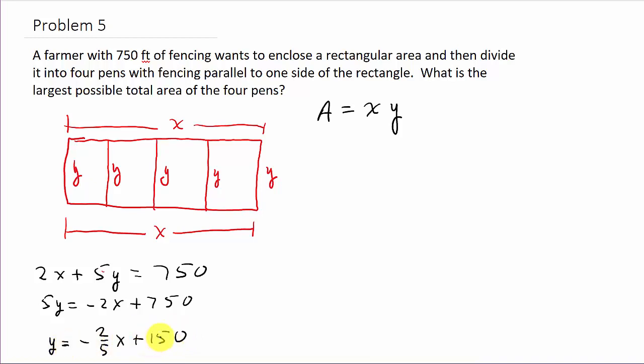So, that's y. So, I'm going to take this and plug it in here for y. So, A is equal to x times y, which is negative 2 fifths x plus 150. And so, the area is negative 2 fifths x squared plus 150x.